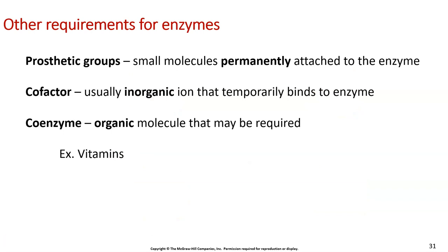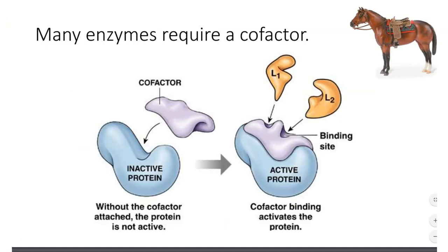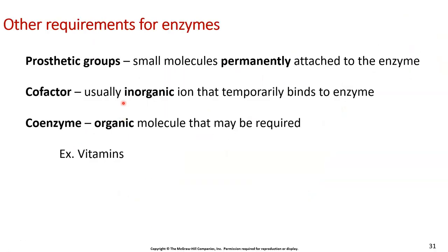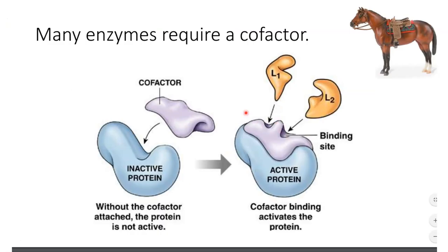Some other factors required for enzymes are called prosthetic groups — just like a prosthetic limb, these are small molecules that are permanently attached to the enzyme. A cofactor is an inorganic ion that temporarily binds to the enzyme. A coenzyme is an organic molecule required for the enzyme to function — vitamins are a great example of coenzymes, which is why it's important to take vitamins since they help our enzymes work properly. Cofactors temporarily bind and help the enzyme do its job better.